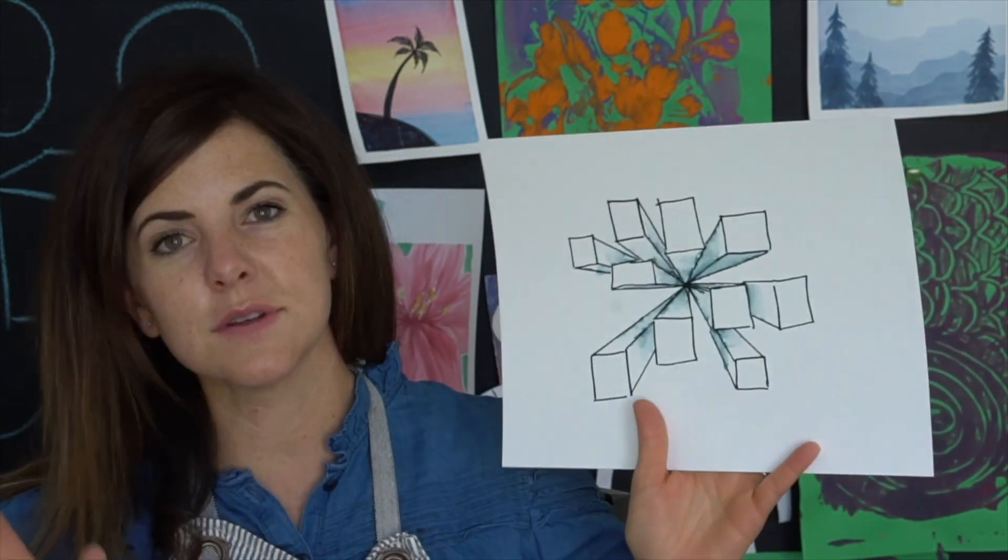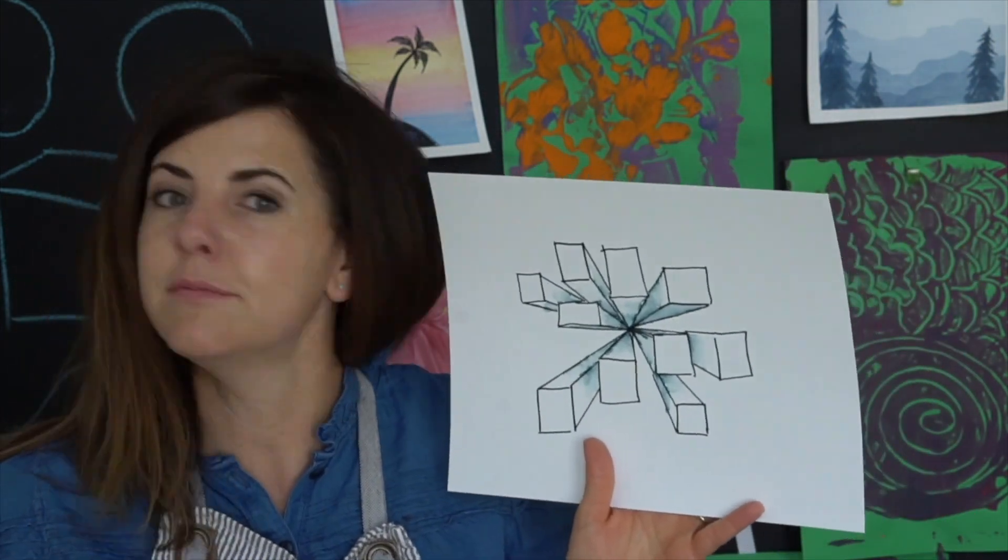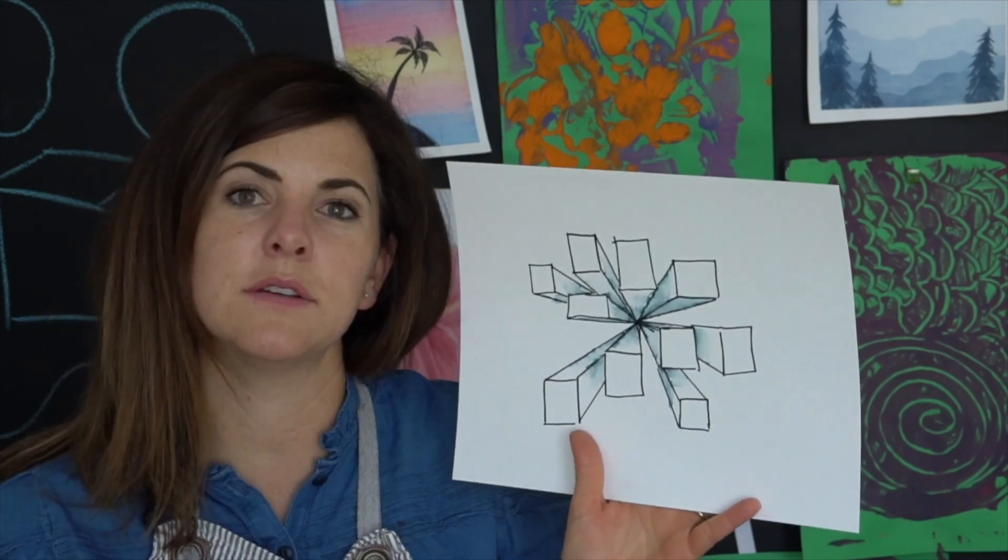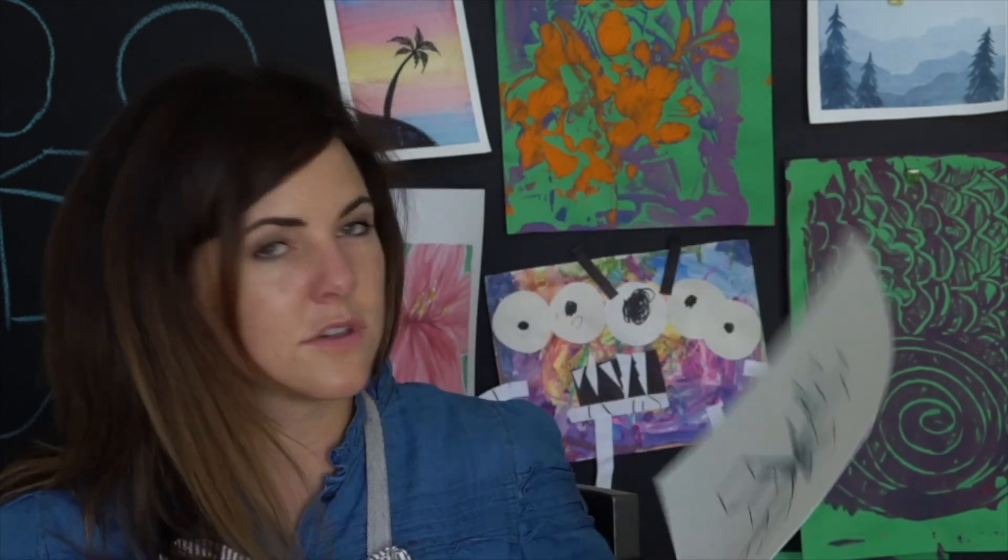The other idea I have for you is to draw a road scene using one point perspective. You can find a ton of ideas for those online. If you're advanced, try two point perspective and three point perspective. Perspective is just a really cool trick for making the illusion of space in your drawings. I hope you enjoy this one and have a wonderful day.